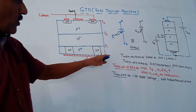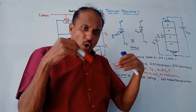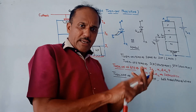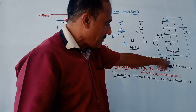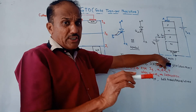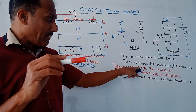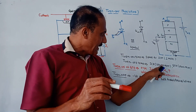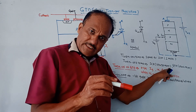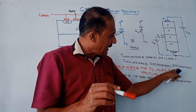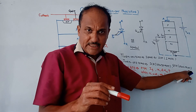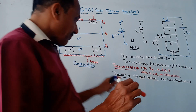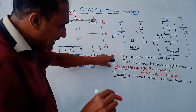As far as turn on time is concerned, for both GTO and SCR, the turn on time is the same — typically one millisecond. However, there is a major difference in turn off time. In case of SCR, turn off time is typically five to thirty milliseconds, whereas in case of GTO it is one to two milliseconds, which is drastically reduced.